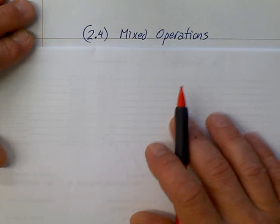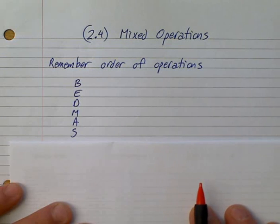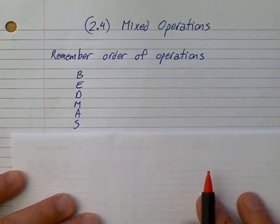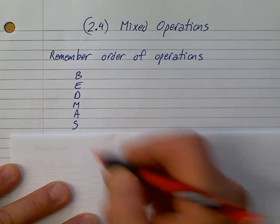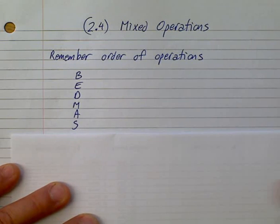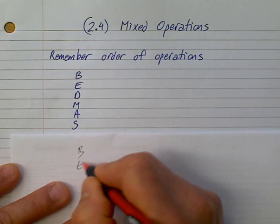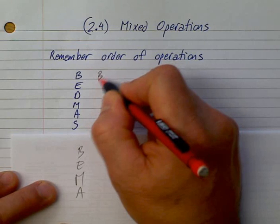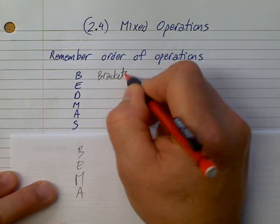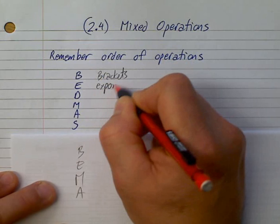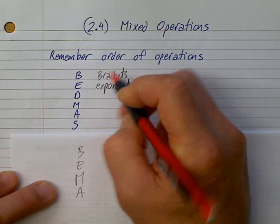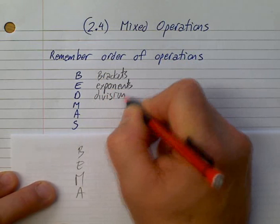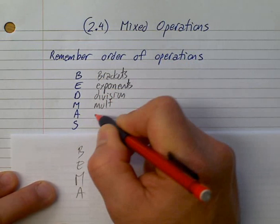And when we have mixed operations, what we need to do is look at the order of operations. Some of you may have seen it as BEDMAS. Some of you may have seen it as BEMA as well, and I'll show you why. They're essentially the same thing. So first of all, B stands for brackets. E stands for exponents. D stands for division, M multiplication, A add, and S subtract.